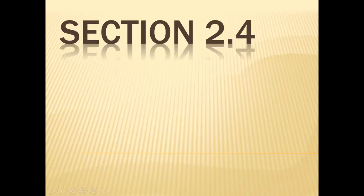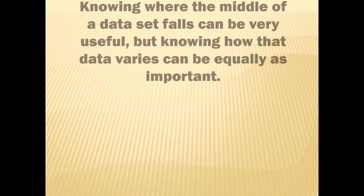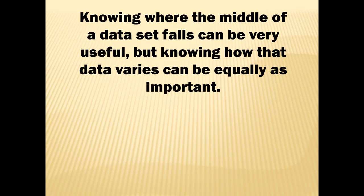Today we're looking at Section 2.4, which is about measures of variation. Knowing where the middle of a data set falls can be very useful — that's what we went over in Section 2.3 — but knowing how that data varies can be equally as important.